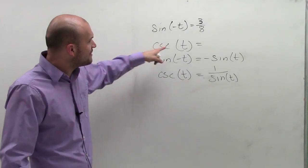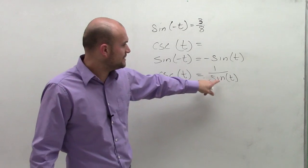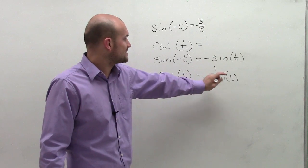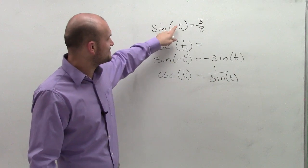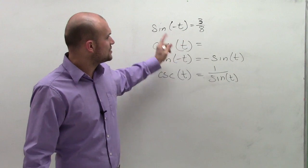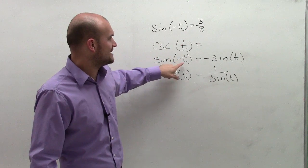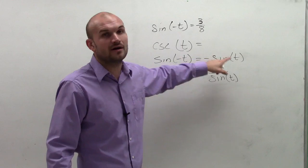To evaluate cosecant of t, I need to be able to figure out what sine of t is. Now, I say that sine of negative t equals 3/8, so 3/8 has to equal negative sine of t.